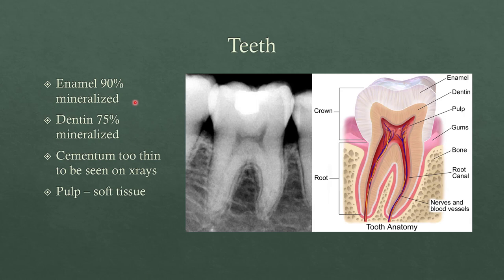Enamel is more mineralized than dentin, which is why it shows up more white. But this completely white material is completely radiopaque and has to be some type of metal — in this case, likely an amalgam restoration. Enamel is sometimes cited as 90 or 95% mineralized. Dentin is more similar to bone, about 75% mineralized. Cementum follows the outline of the roots of the teeth, but you're not going to see it in x-rays because it's too thin. What's inside that's even darker is the pulp — soft tissue containing the nerves and blood vessels inside the tooth.